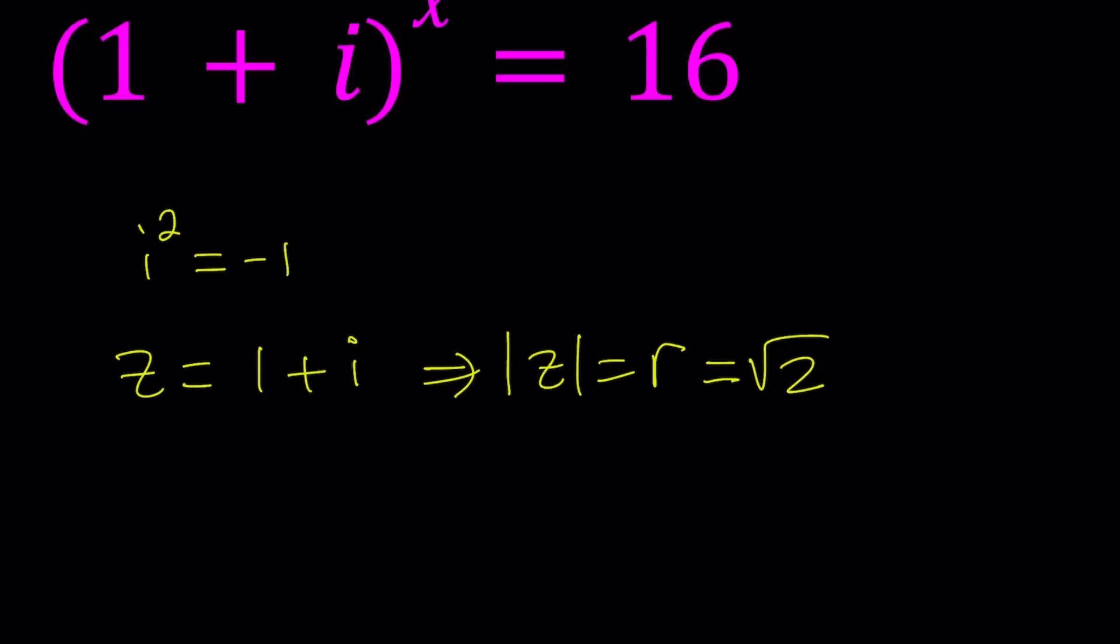This is basically when you graph this complex number, its distance from the origin. This point is given as (1, 1). We have the real axis, we have the imaginary axis. That is the absolute value of z.